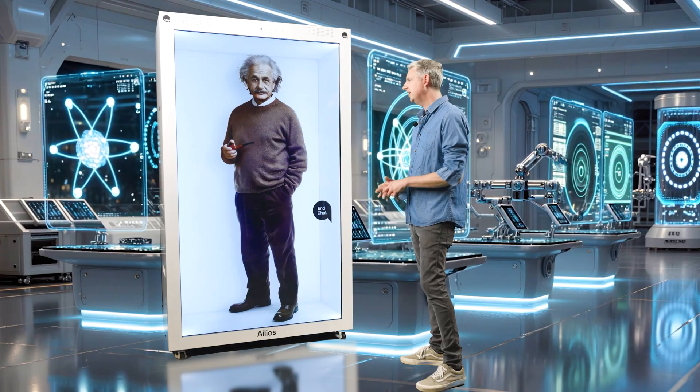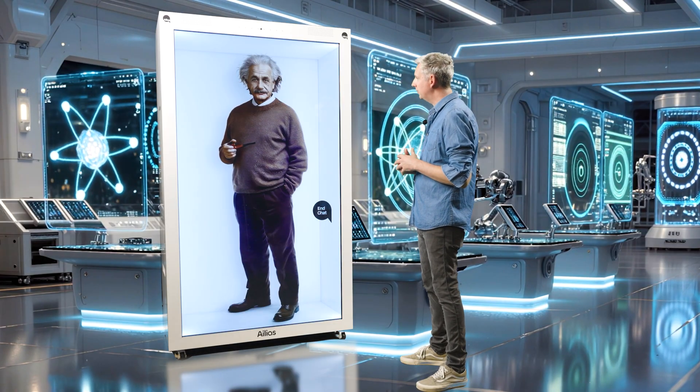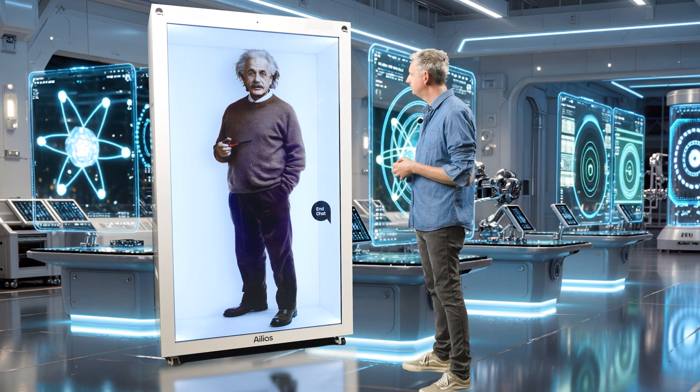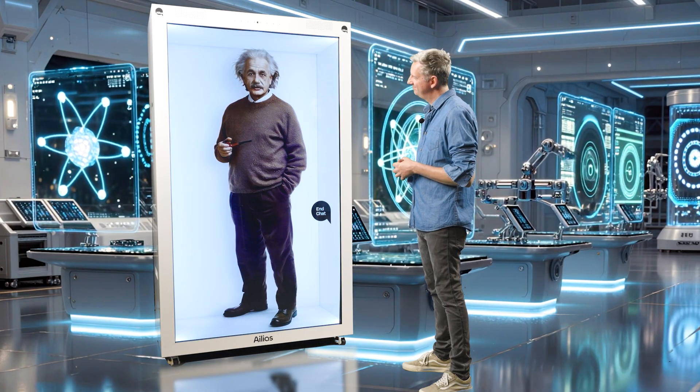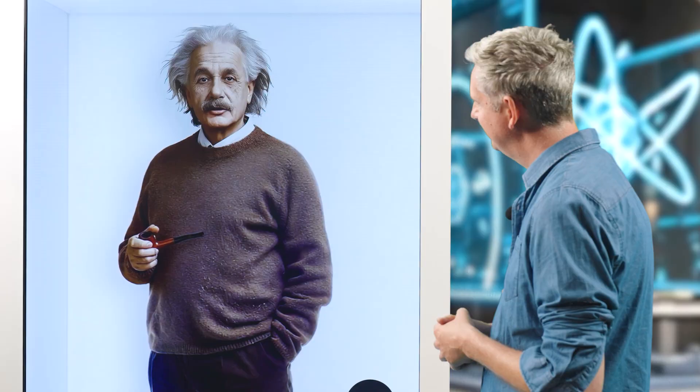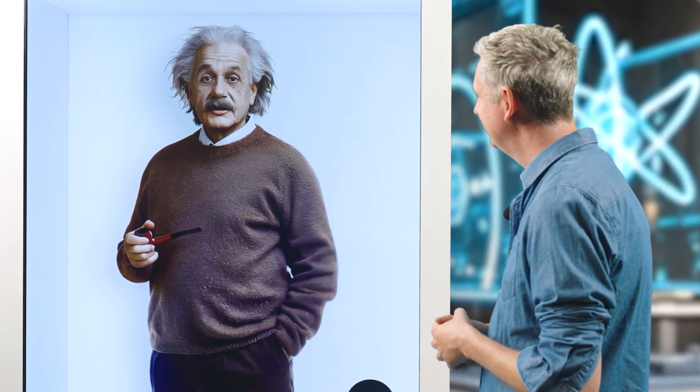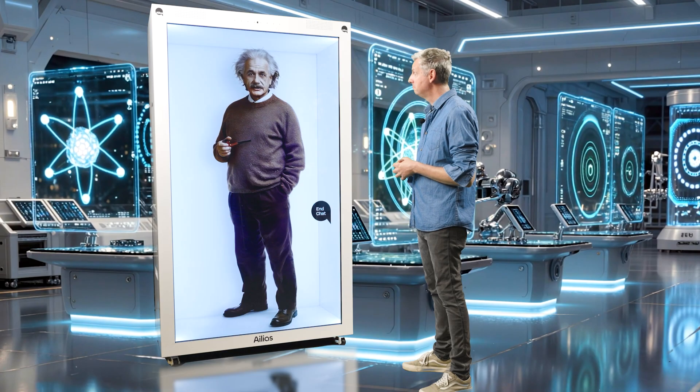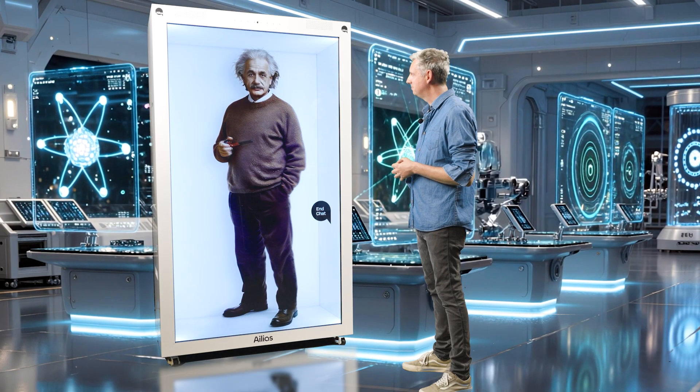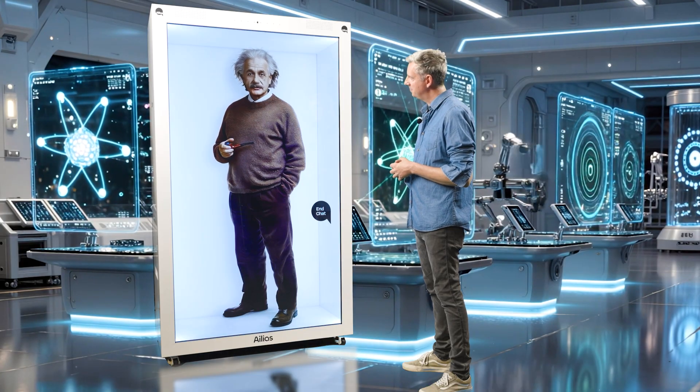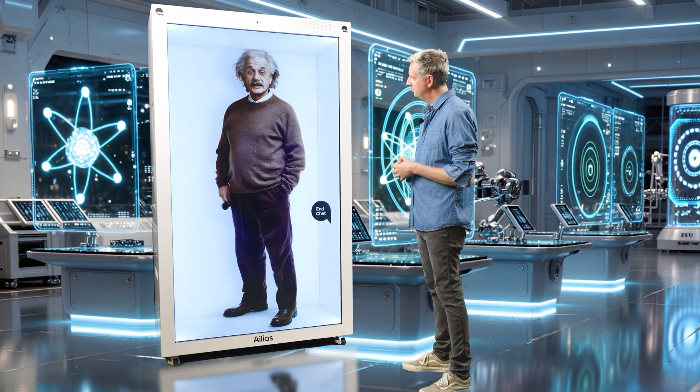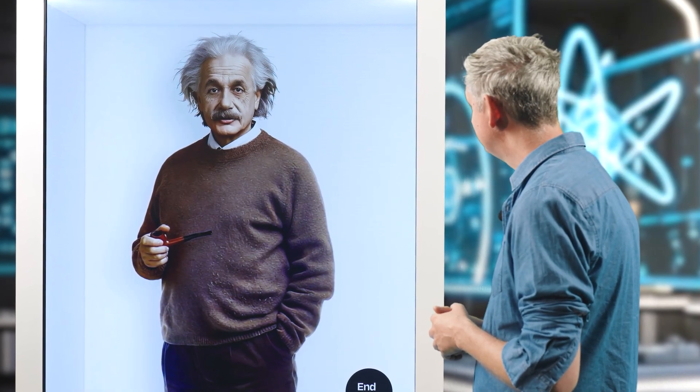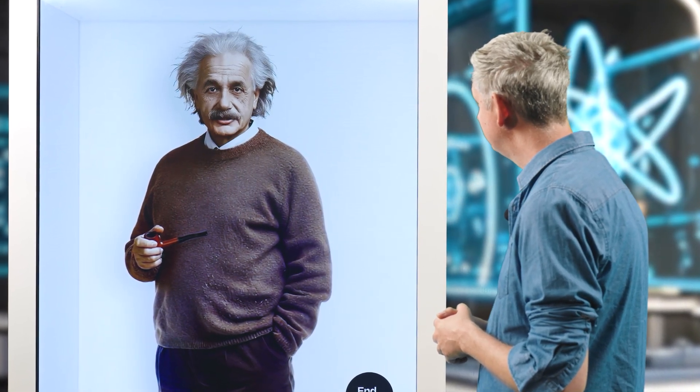If you were asked to design a roller coaster based on the laws of relativity, what would make it unique? What a fun idea. I would design a roller coaster called Relativity Rush. It would feature loops and twists that demonstrate time dilation and length contraction. As riders speed up, they'd feel time slow down, and the perspective would shift, making them appear to shrink. It would be an exhilarating journey through space-time, blending thrills with education. Would you ride such a coaster?